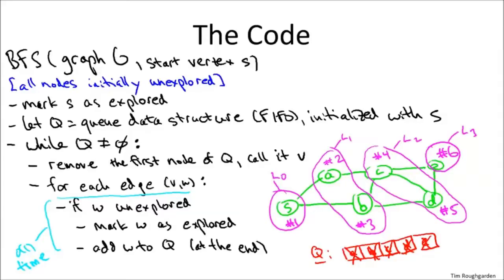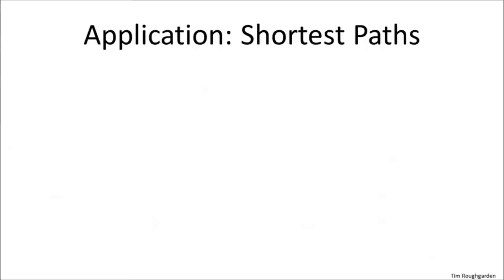For notation, I'm going to use DIST(V) to denote the shortest path distance with respect to a starting node S—the fewest number of edges on a path that starts at S and goes to V. You can define this the same way for undirected or directed graphs. In a directed graph, you always traverse arcs in the forward direction.